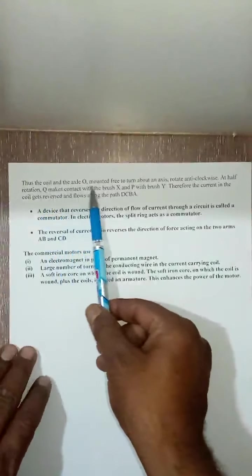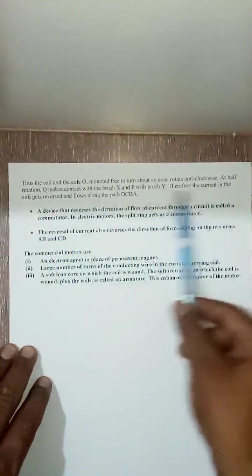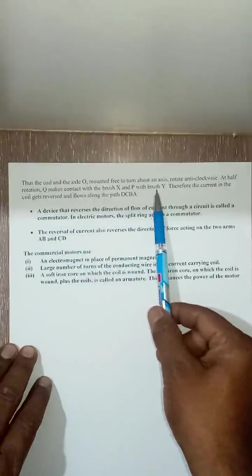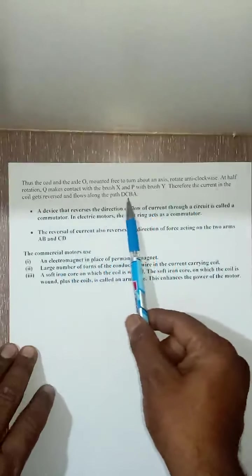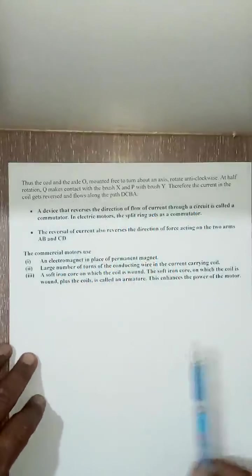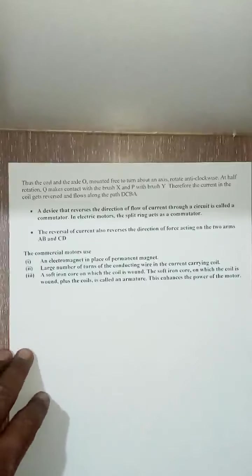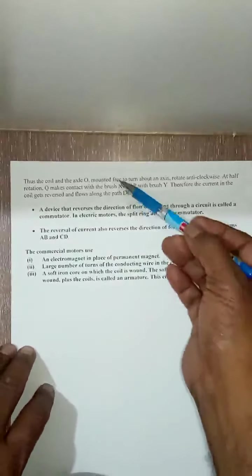Thus the coil and the axle mounted free to turn about an axis rotate anti-clockwise. At half rotation Q makes contact with the brush X and P with brush Y. Therefore the current in the coil gets reversed and flows along path DCBA. This is what the statements I have read for you. I have already explained you about the motor. This is what in detail form.